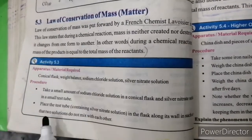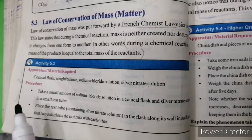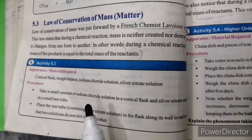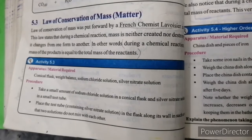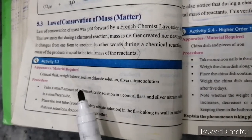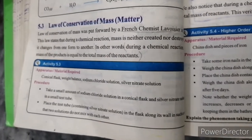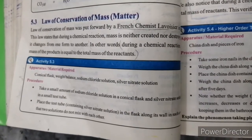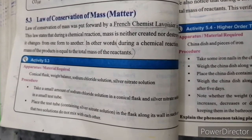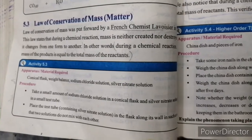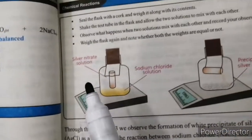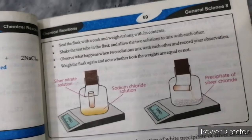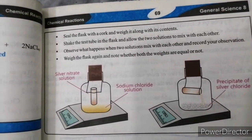The lab demonstration of the law of conservation of mass has been set up. We have a conical flask, a weight balance, a sodium chloride solution, and a silver nitrate solution. You have to put the sodium chloride solution in the conical flask, and take the silver nitrate solution in a test tube. You have to place the test tube of silver nitrate inside the upper part of the conical flask.